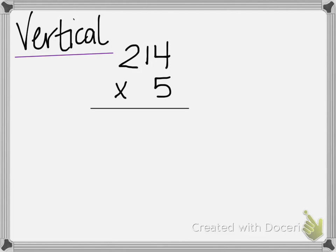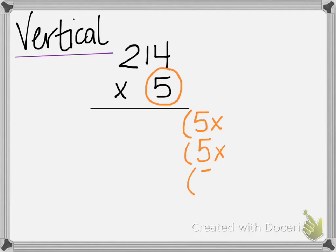Here's another three-digit by one-digit multiplication method. First, I look at the single digit, which is five here, and I have students copy it out three times — five times, five times, and five times. I find that this helps alleviate some confusion for some students.